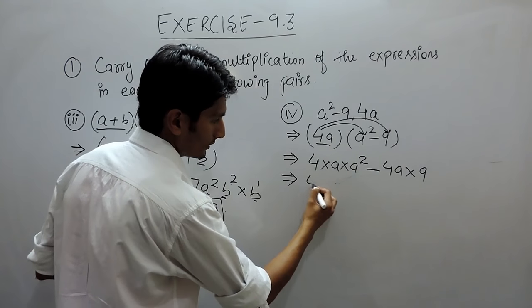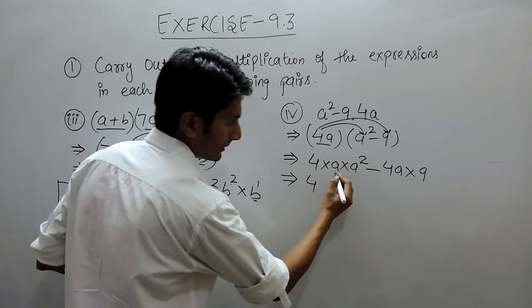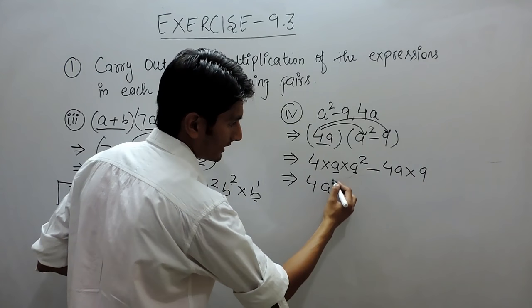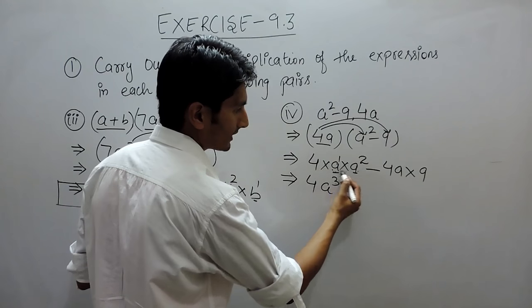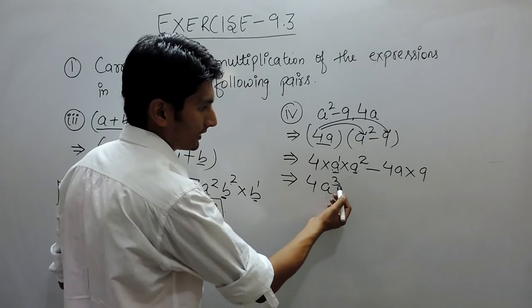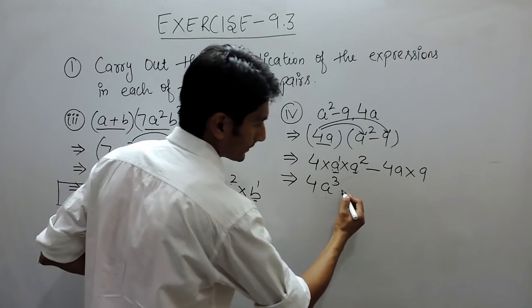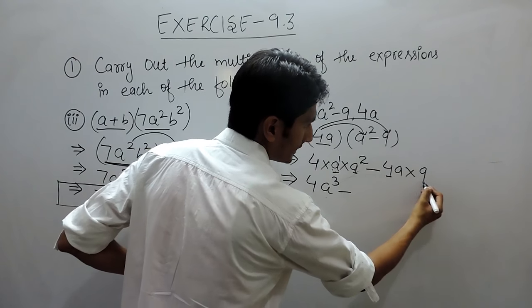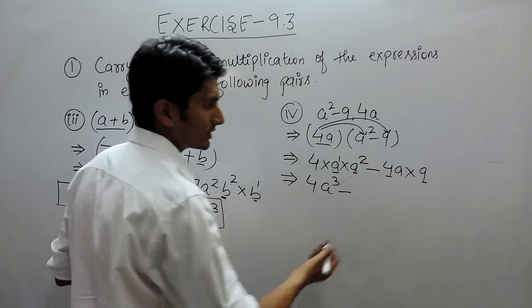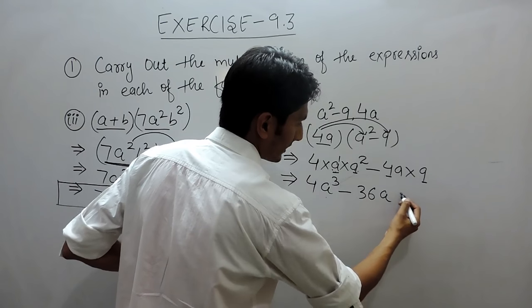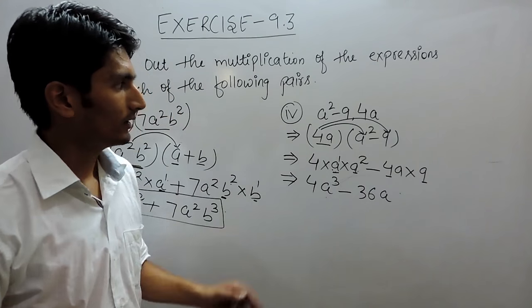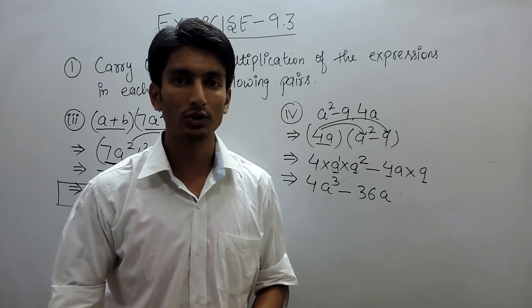In this case, 4 will remain as it is, but when a is multiplied by a², it will give a³ because we know that like terms, when multiplied, their power should be added. And in this case, these constants should be multiplied first, so 4 into 9 is 36, and a will remain as it is. That is how we can solve this particular question. Thank you.